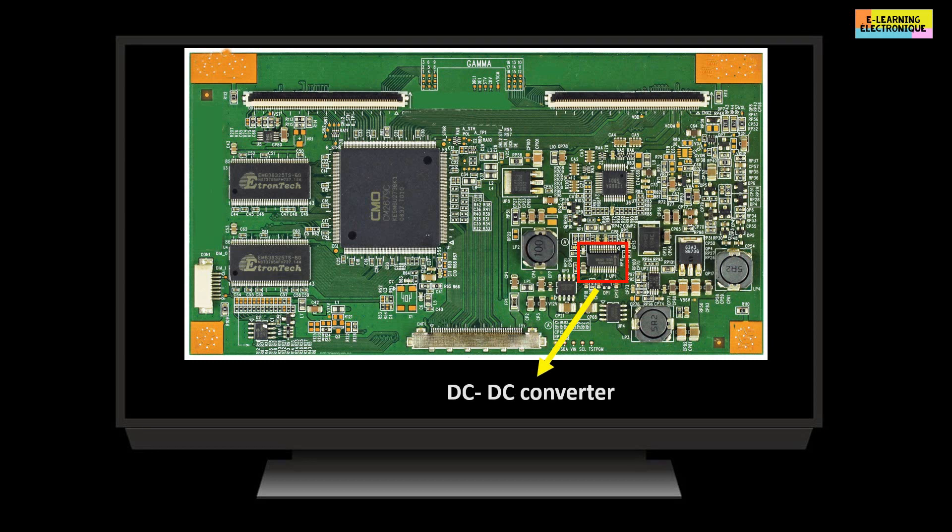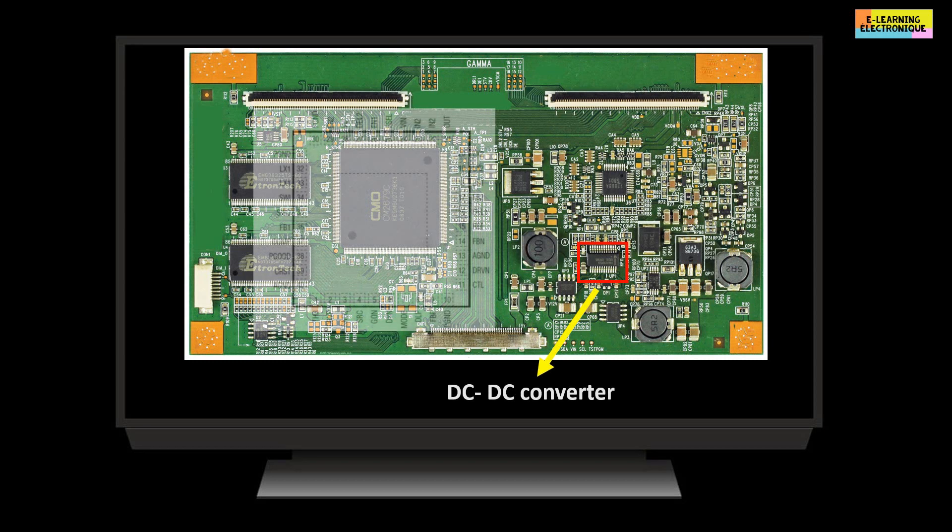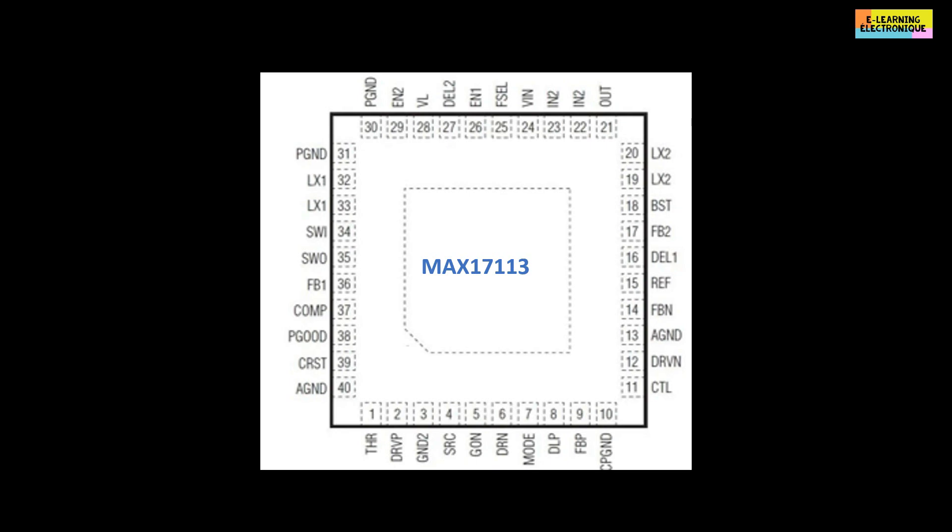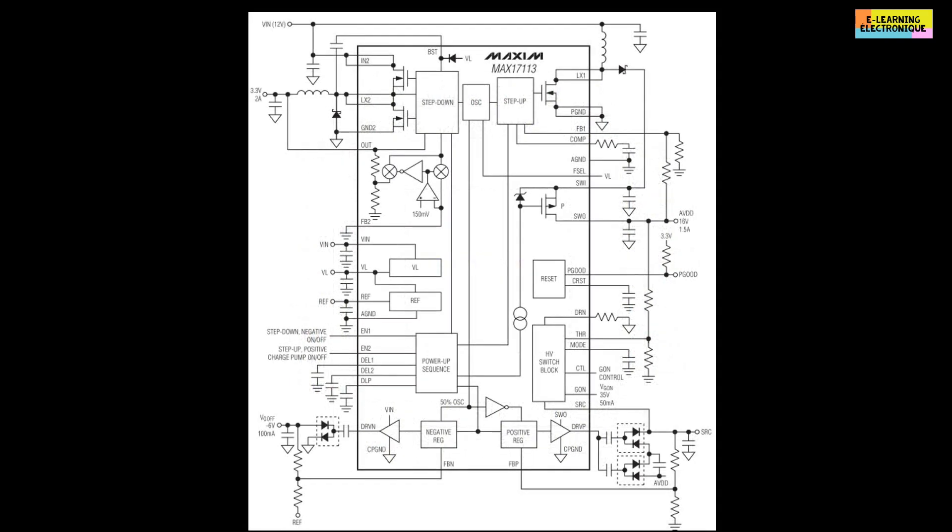For the description, we will take as an example the chip of the company Maxim under the reference MAX17113. This electronic chip is an integrated circuit with multiple circuits. It generates various voltages from a single supply voltage which is here 12 volts.